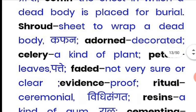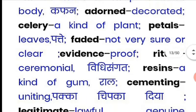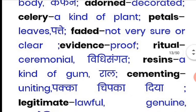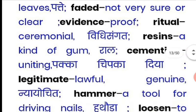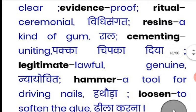'Celery' refers to a plant. 'Petal' means leaves of a flower. 'Faded' means not clear or not visible. 'Evidence' means proof. 'Rituals' are ceremonial practices — a specific method followed during religious occasions.